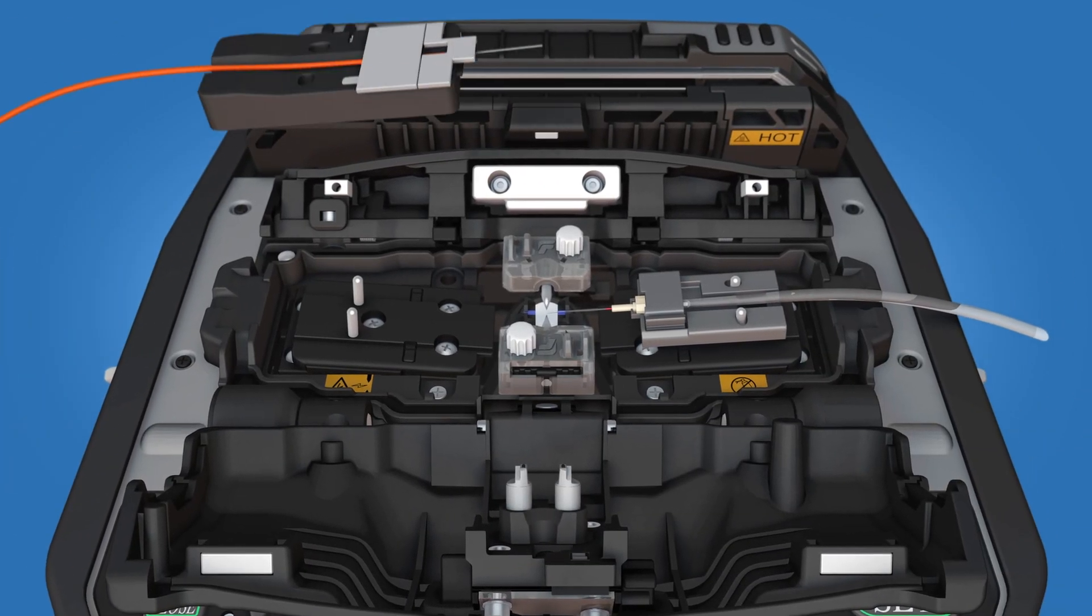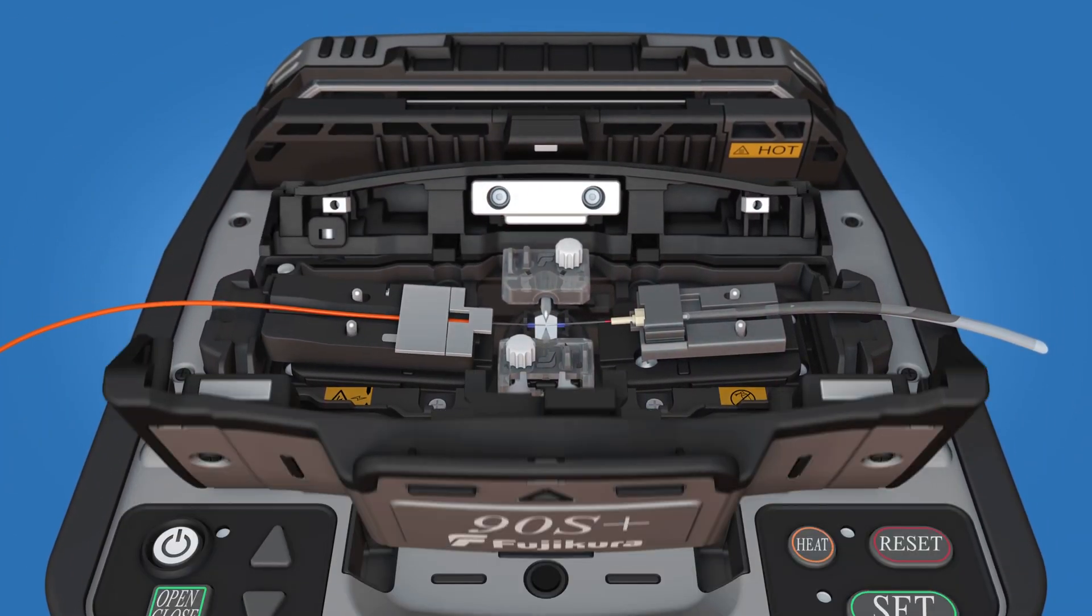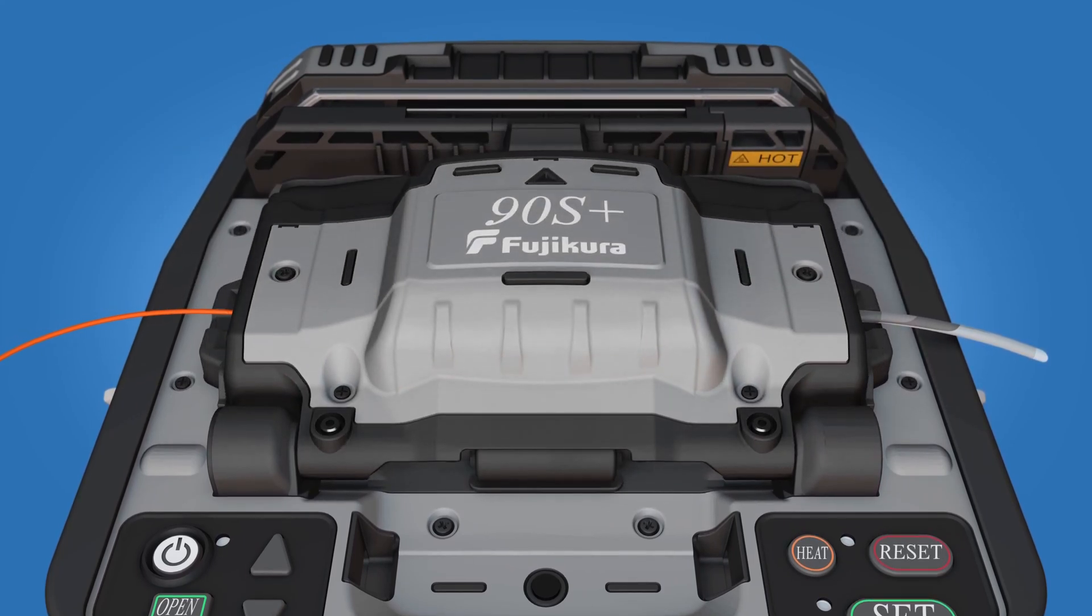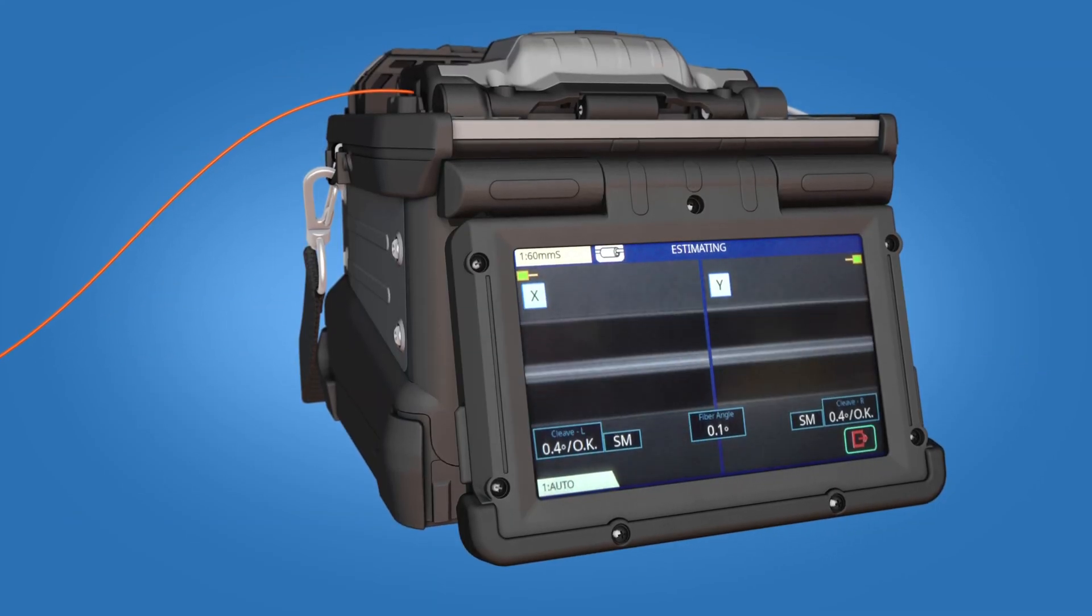Load the fiber holder into the left side of the fusion splicer and close the wind protector. Splice the fiber to the fuse connect connector.